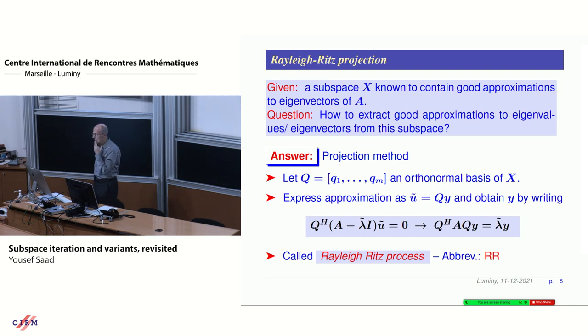I'm going to go back to some basics of just introducing subspace iteration. The key ingredient there is really Rayleigh-Ritz projection. So you're given a subspace X. We know it contains good approximations to eigenvectors of A. The question is, how do you extract those eigenvectors and eigenvalues? You need the projection process for this.